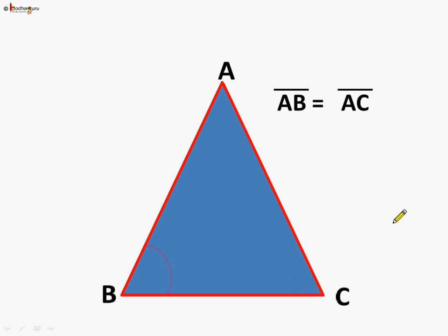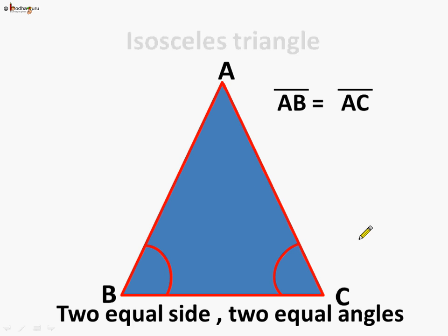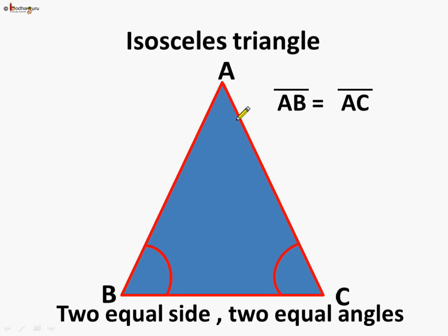And what about the angles? If we measure angle B and angle C, we will find out that both of these angles are also equal. So not only the two sides, but also the two angles are equal. When two sides are equal and two angles are equal, it is an isosceles triangle. So triangle ABC is an isosceles triangle.